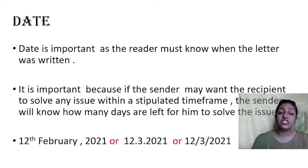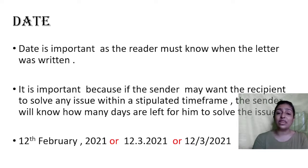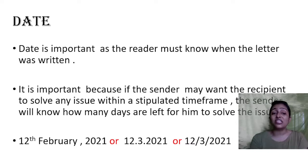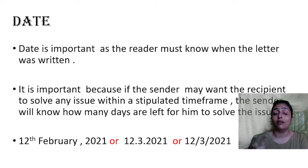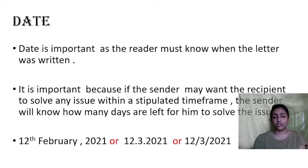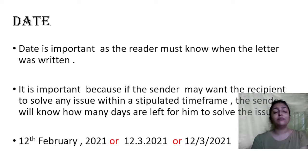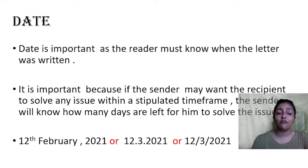The next is date. Why is the date important? Why do we mention date in formal as well as informal letters? Date is important as the reader must know when the letter was written. It is important because if the sender may want the recipient to solve any issue within a stipulated time frame, the sender will know how many days are left to solve the issue. You can write the date in any format: 12th February 2021, or 12.3.2021, or 12/3/2021. But mostly we prefer the first one.